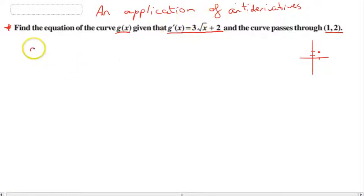So if g'(x) = 3√x + 2, that means that g(x)... Sorry, I should put some brackets in there. That means that g(x) is going to be equal to the integral of 3√x + 2. Now, you guys should be getting pretty good at this. First step is to get rid of that radical, so 3x^(1/2) + 2, and then integrate that.